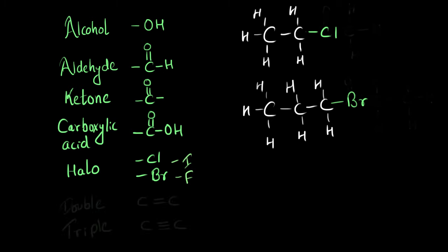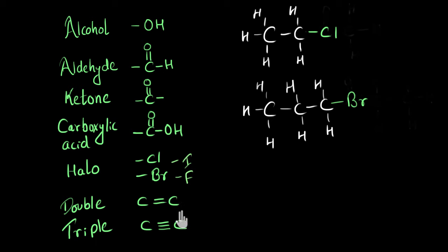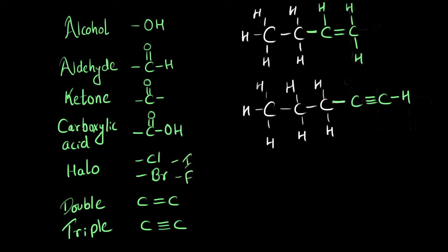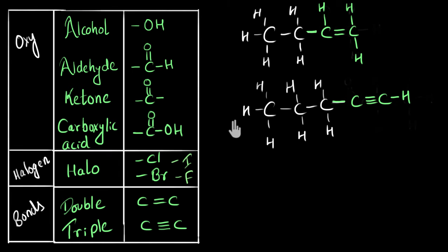Now one last group: the double bond and the triple bond group. These are also functional groups. When they come in between an alkane, they provide special functions to it. So we have seen a lot of functional groups in broad categories: one is the oxygen-containing functional groups — alcohol, aldehyde, ketone, and carboxylic acid; another is the halogen-containing functional groups — chlorine, bromine, iodine, and fluorine; and the third category is bonds — double bonds and triple bonds. These are also functional groups.